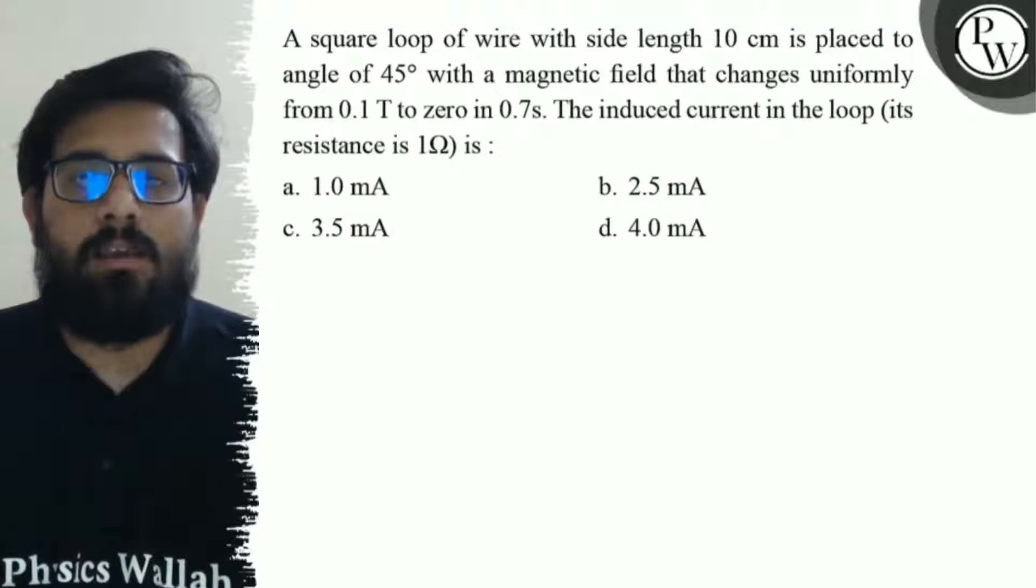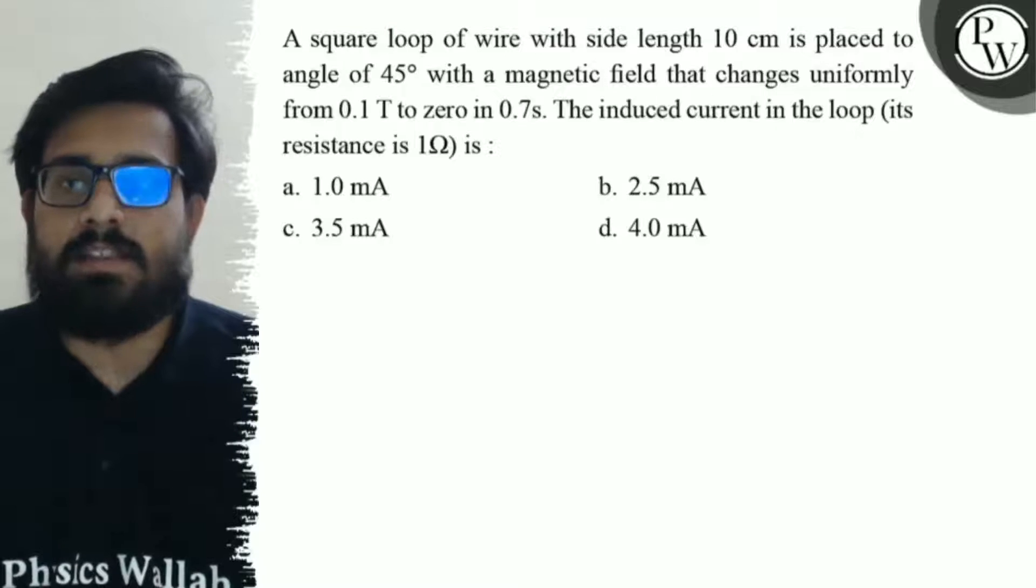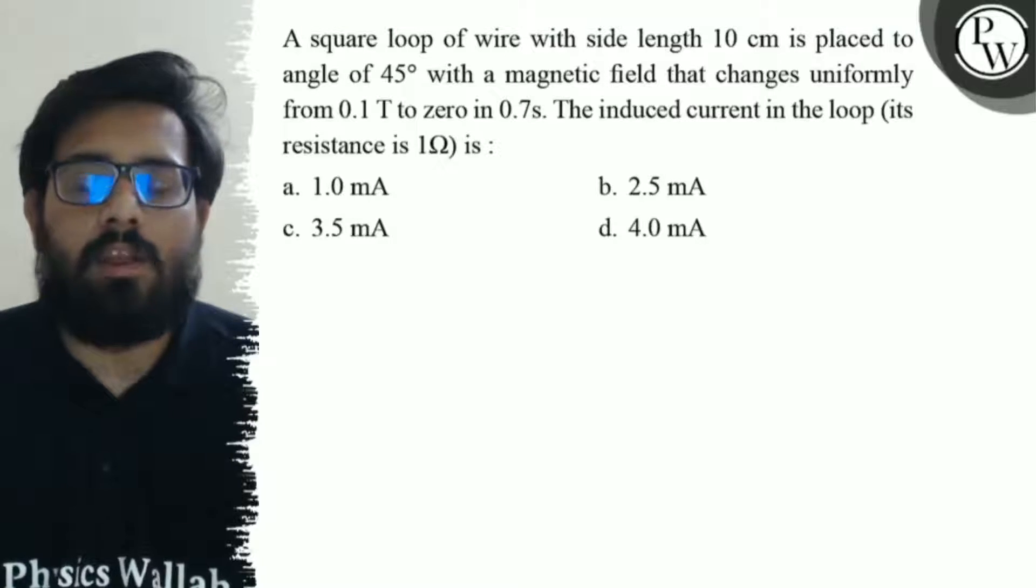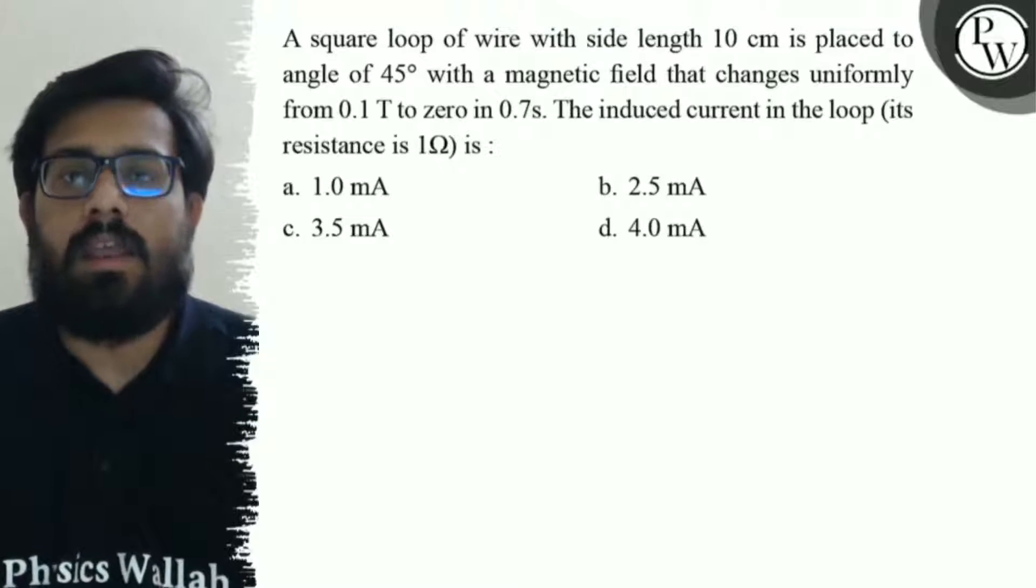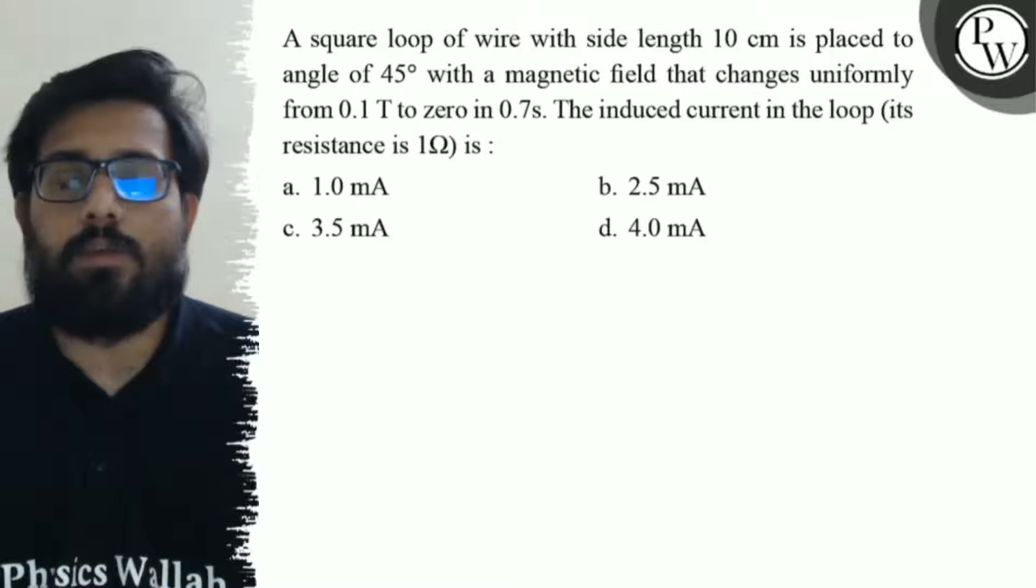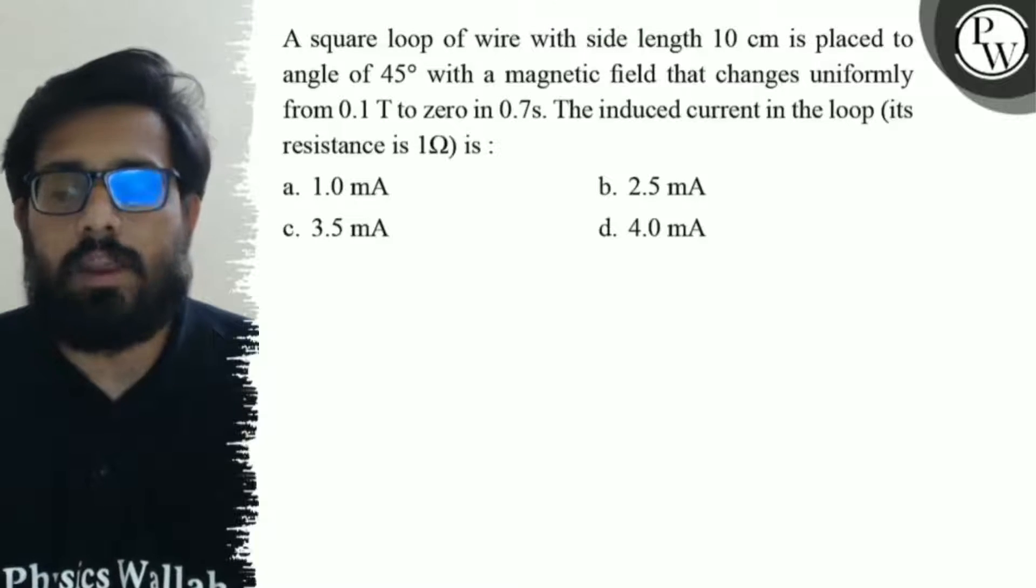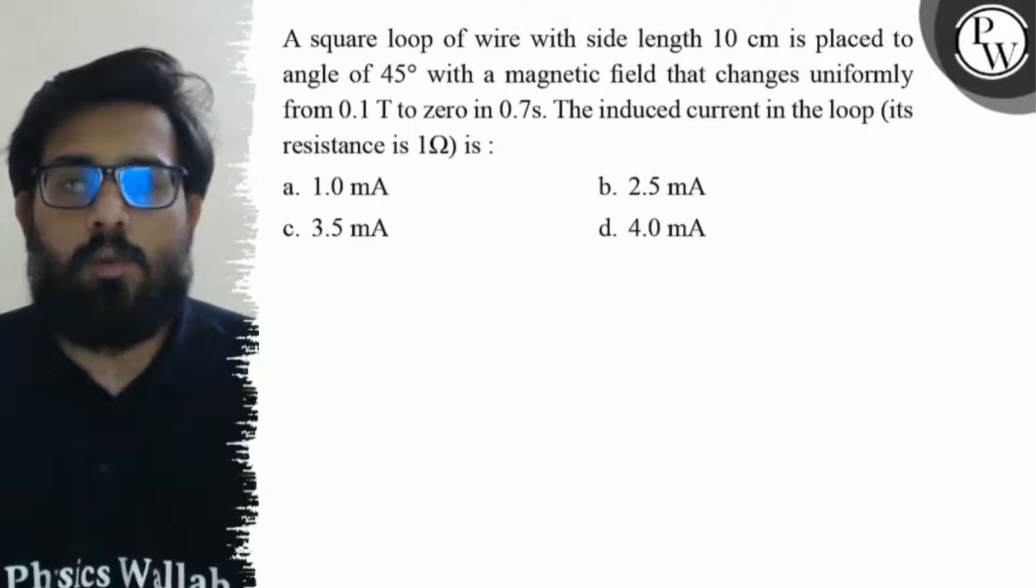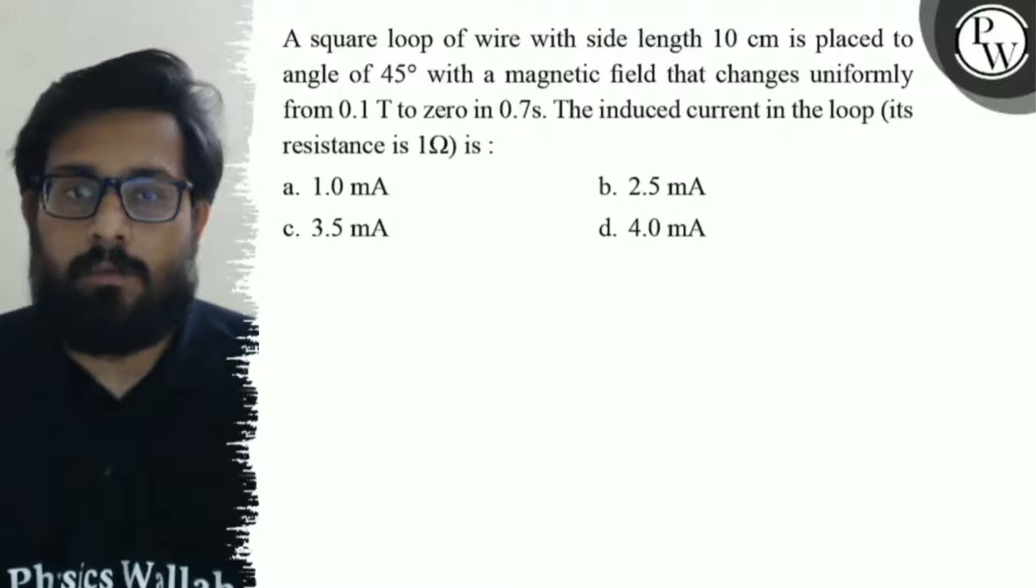A square loop of wire with side length of 10 cm is placed at an angle of 45 degrees with a magnetic field that changes uniformly from 0.1 Tesla to zero in 0.7 seconds. The induced current in the loop, its resistance is 1 ohm, will be.